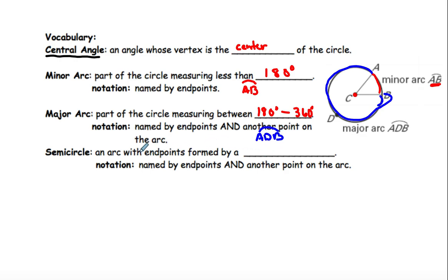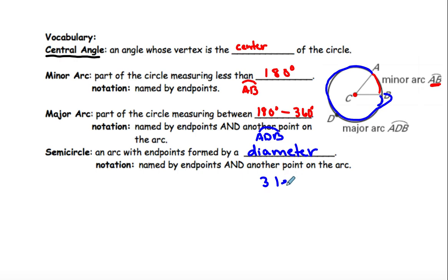A semicircle is half — it's an arc with endpoints formed by a diameter. The notation is named by the endpoints and another point. So the semicircle is labeled like a major arc, so it also has three letters and then the arc sign.